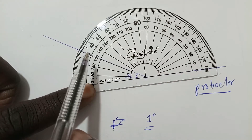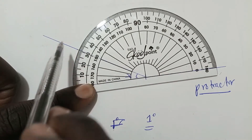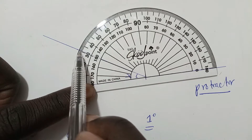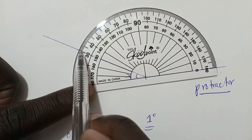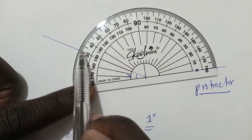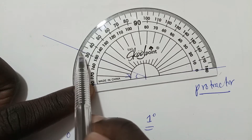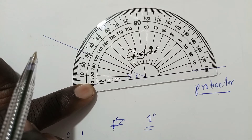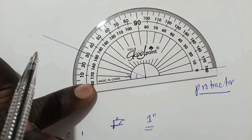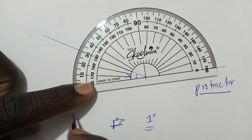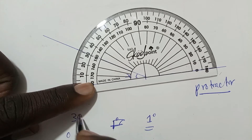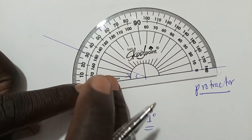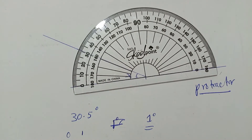Look at this carefully. This value here is 30, and this is 31 — this line passes between 30 and 31. Should we write it as 30.5 degrees? Should we do that?